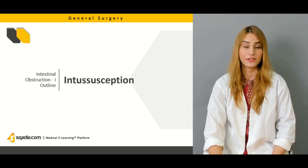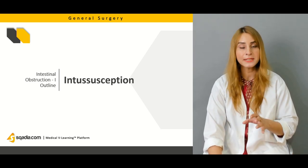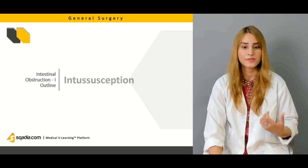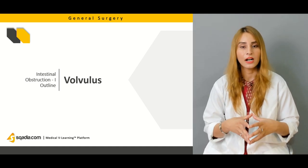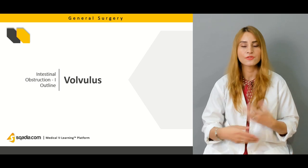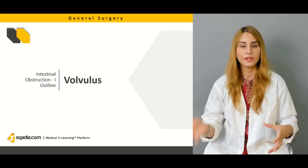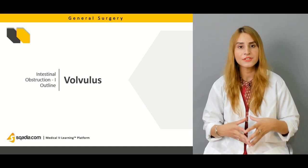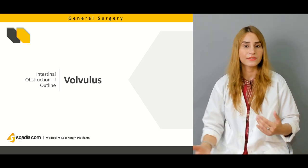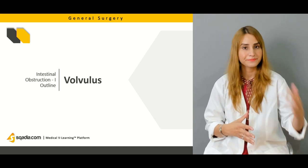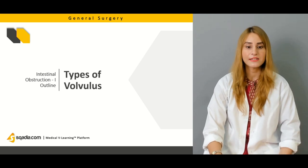We'll be talking about intussusception, which is the most common cause of intestinal obstruction in children, covering its different types and parts. We'll also talk about volvulus, a condition in which a segment of the intestine is twisted upon itself. There are different types of volvulus — they can be congenital, such as volvulus neonatorum with a malrotated gut. In adults, sigmoid volvulus and cecal volvulus are very common. We'll be covering all these types in detail.